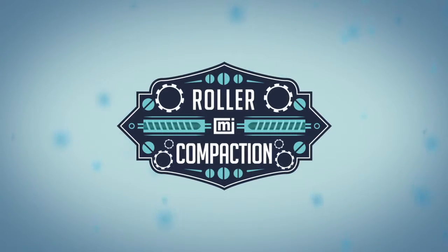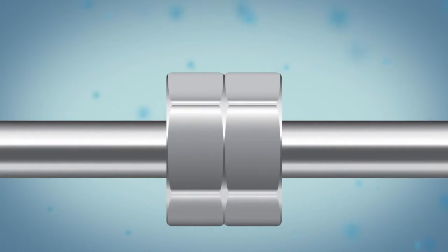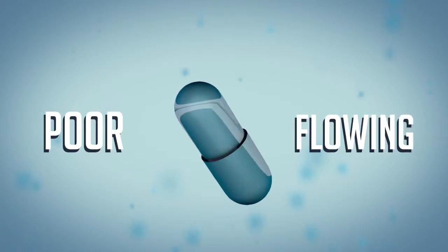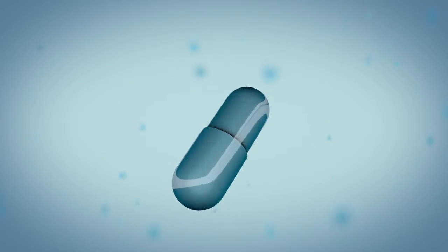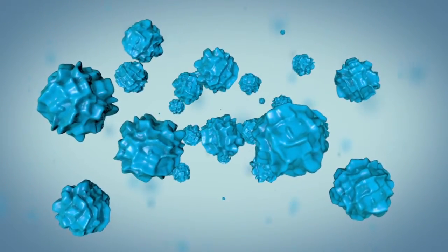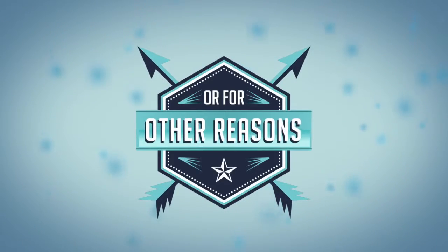Roller compaction is a dry granulation technique used in pharmaceutical manufacturing to make coarse granules prior to compression or encapsulation. Primarily used for poor flowing materials, it can also be used when segregation may be an issue due to large differences in particle sizes for various components of a formulation, or for other reasons.